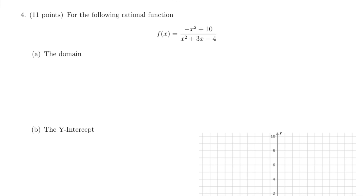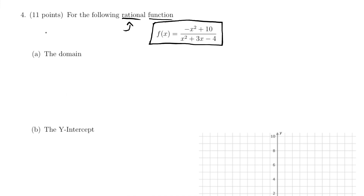Hello, this is Michael Sulak and this is the third in a series of videos going through my second college algebra exam. This is question number four, and it says for the following rational function. Before we go any further, let's remind ourselves that a rational function basically just means it's a big fraction — to be more specific, the top is a polynomial and the bottom is a polynomial.